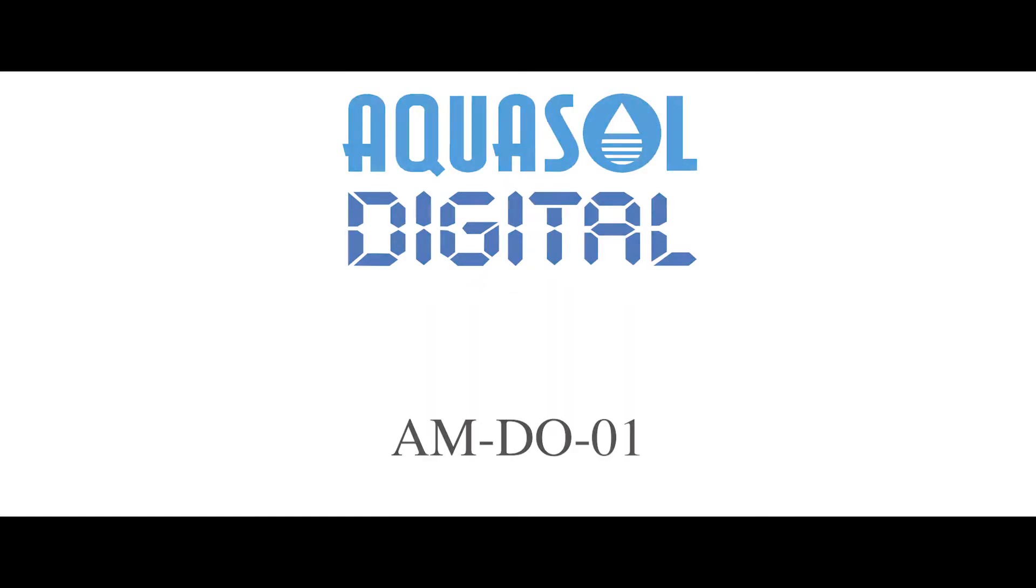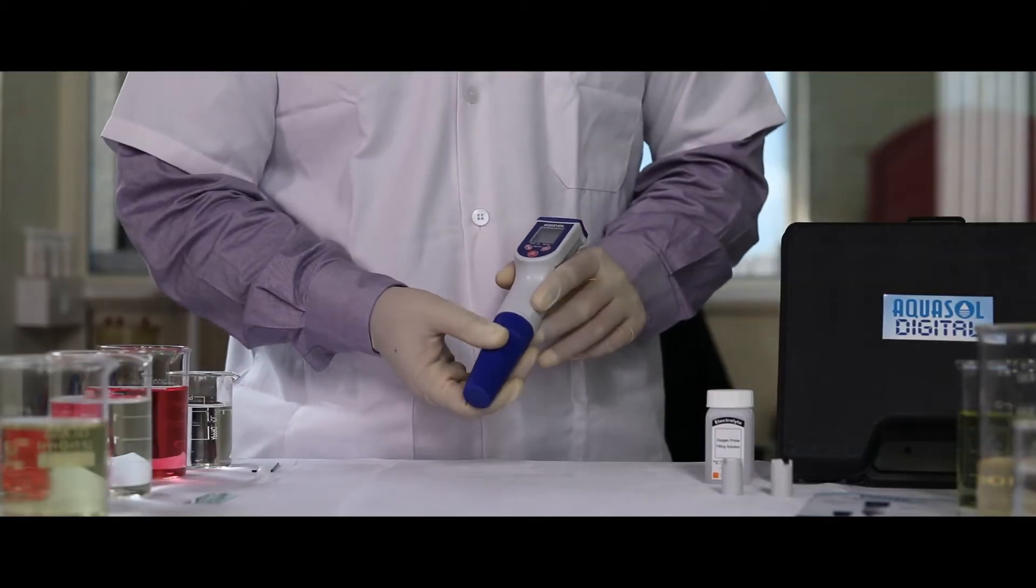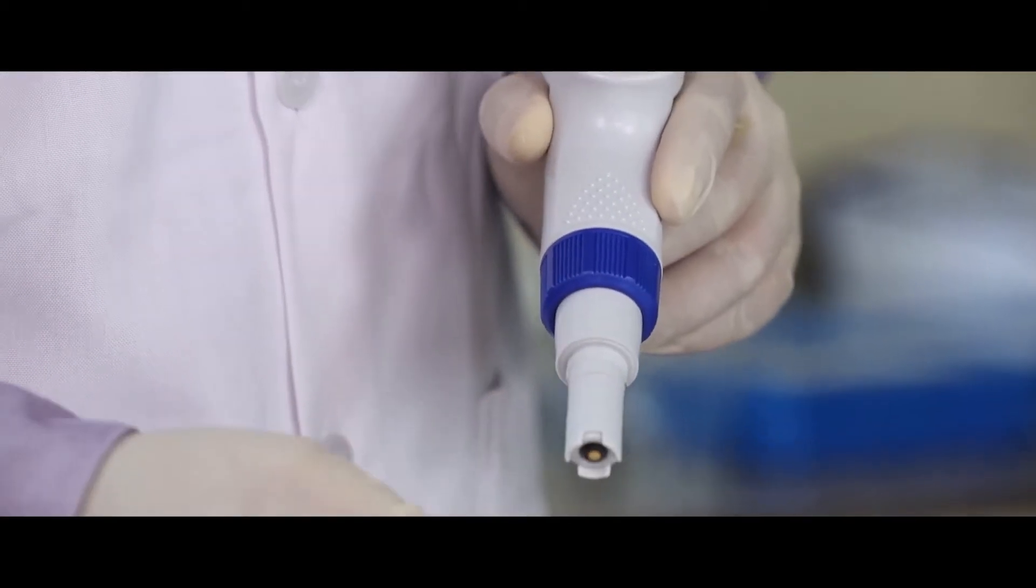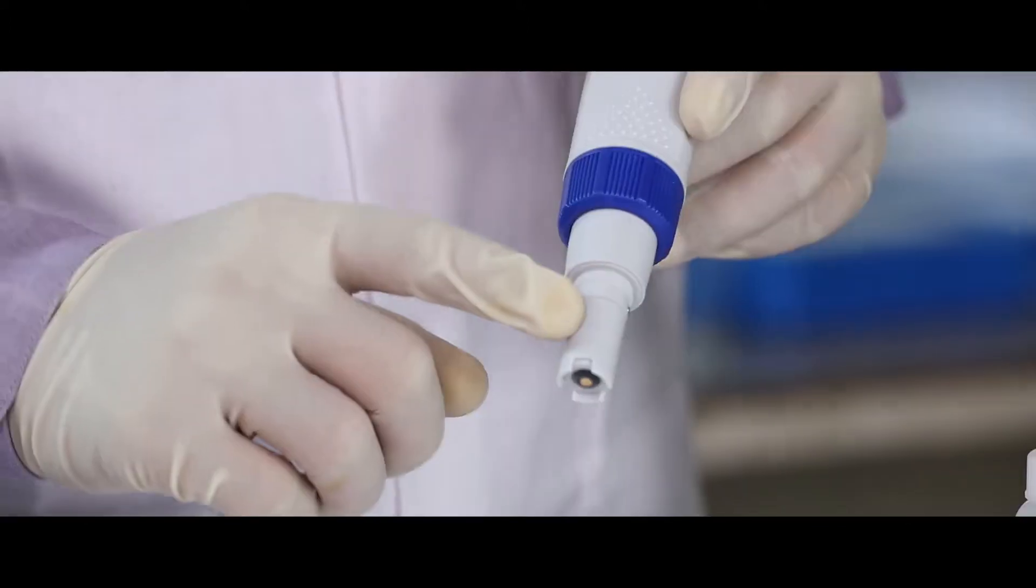This is the AMDO01, a handheld meter designed to measure dissolved oxygen. Remove the protective cap to begin. This is the electrode soaking bottle and the electrode of this meter.